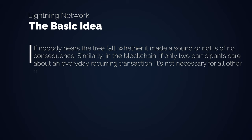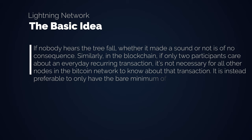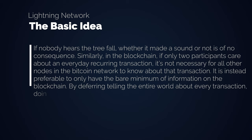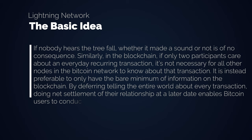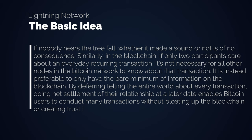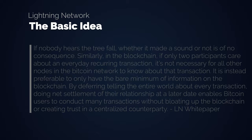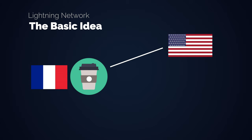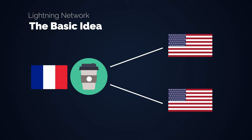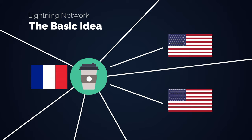Similarly in the blockchain, if only two participants care about an everyday recurring transaction, it's not necessary for all the other nodes in the Bitcoin network to know about that transaction. It is instead preferable to only have the bare minimum of information on the blockchain. By deferring telling the entire world about every transaction, doing net settlement of their relationship at a later date enables Bitcoin users to conduct many transactions without bloating up the blockchain or creating trust in a centralized counterparty. The analogy you will often hear is a coffee transaction — if I am buying a cup of coffee at a local cafe in Paris, does a fitness coach in Los Angeles or a comedian in New York need to know about this transaction? Transactions are publicly broadcasted on the base layer of Bitcoin.